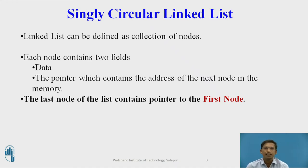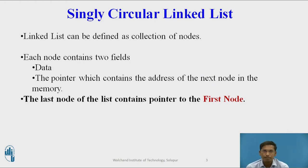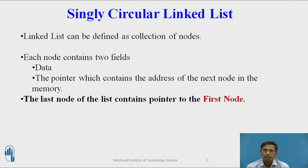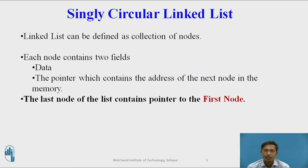In a singly circular linked list, the last node's next pointer holds the address of the first node instead of null — that is why it becomes circular. This is the major difference between a singly linked list and a singly circular linked list.